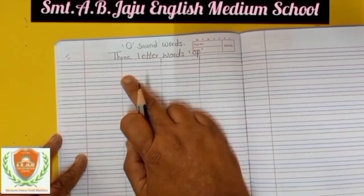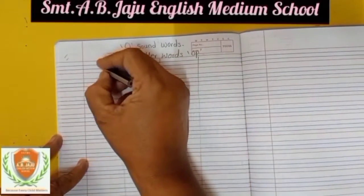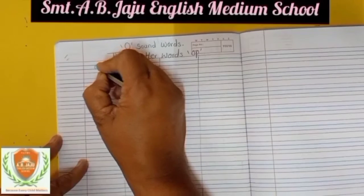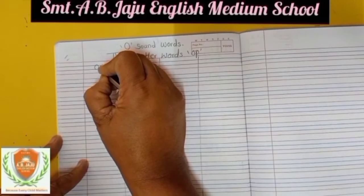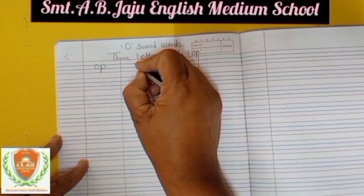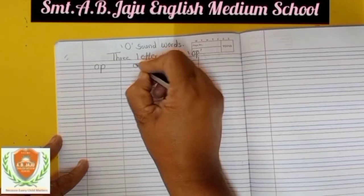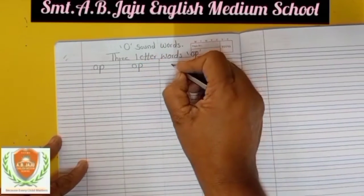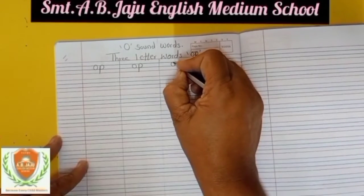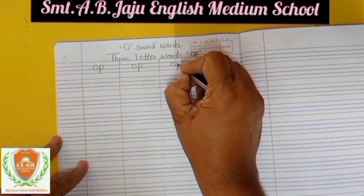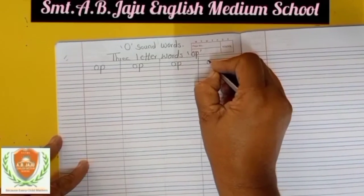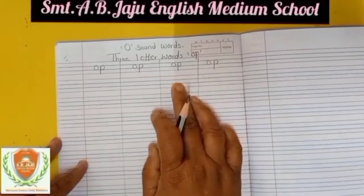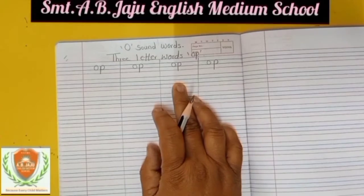We will start the letter. Write down O-P. Sound of O is O, sound of P is P — Op. Like this you have to write it down.